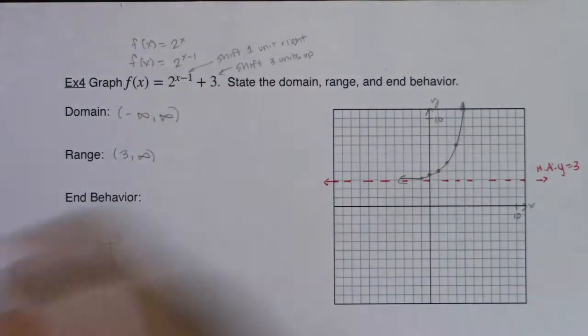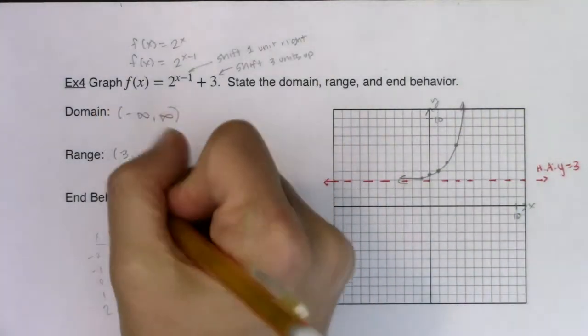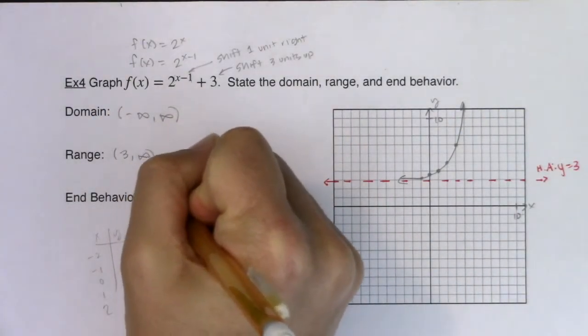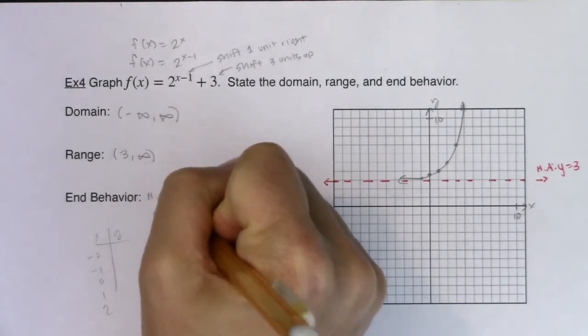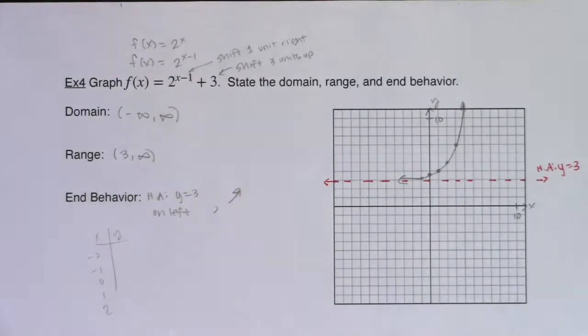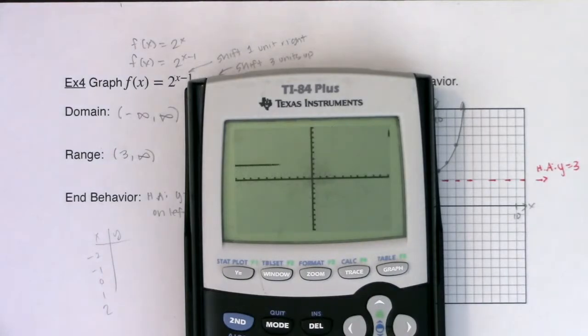Alright, and for our end behavior, if I take a look, it looks like I have a horizontal asymptote on the left and my right arrow is up. So I will write HA, y equals 3. This was on the left. And then on the right, I had an arrow heading up. Alright.